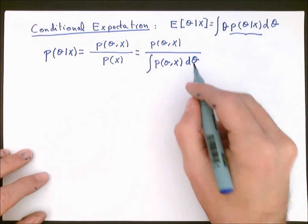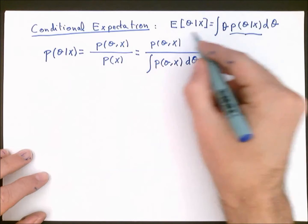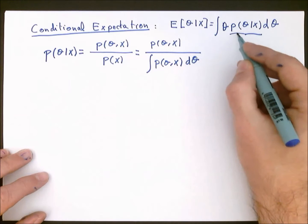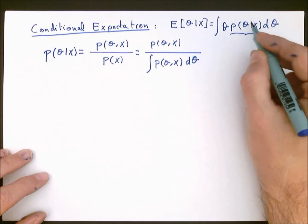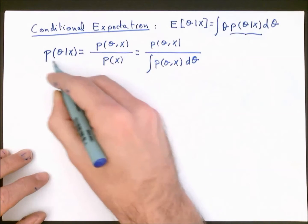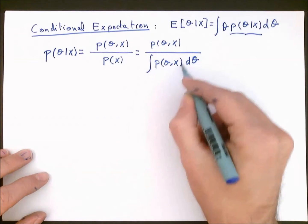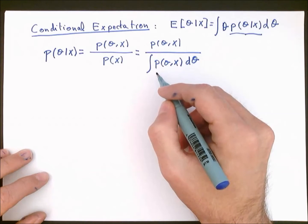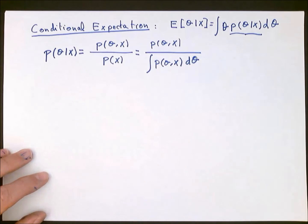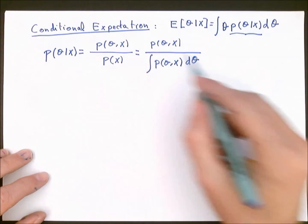So, to compute the MMSE estimator — which is a conditional expectation — we need the posterior probability density function of the unknown variable given the data. To obtain this posterior PDF, we need a full statistical description of our estimation problem: the joint PDF of our unknown variable and the data. As noted before, this may not be easy to obtain for every estimation problem.